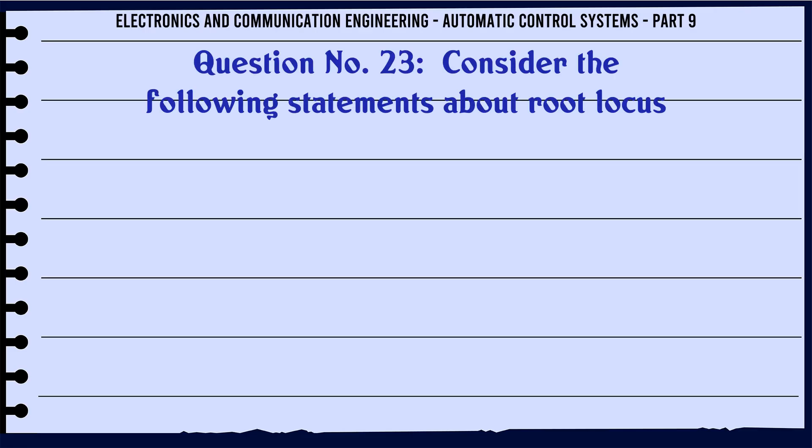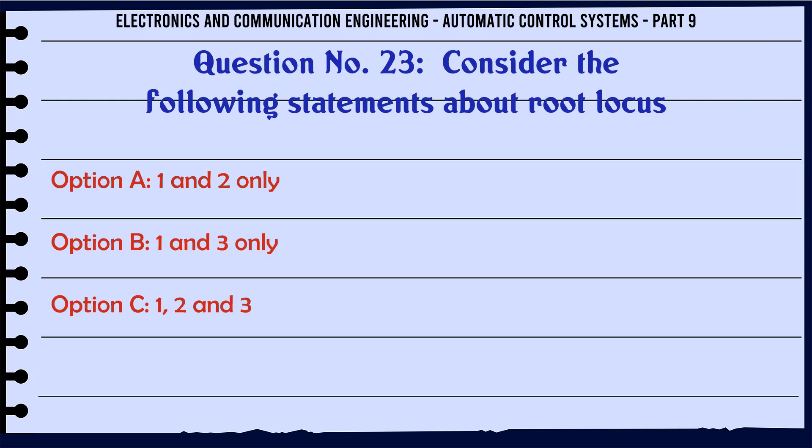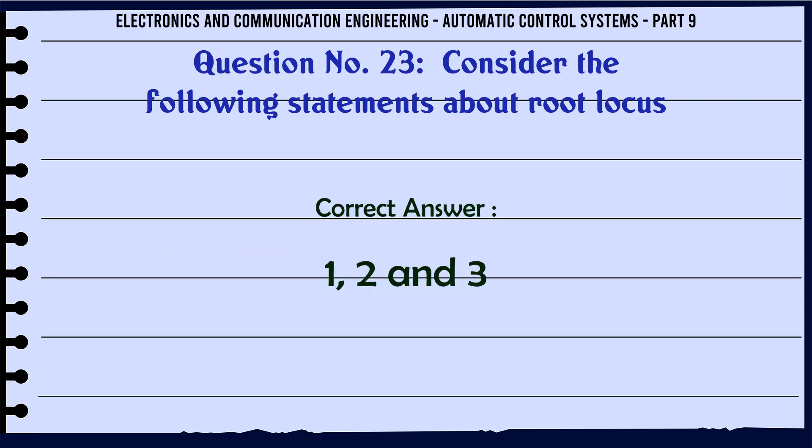Consider the following statements about root locus. Options: A. 1 and 2 only, B. 1 and 3 only, C. 1, 2 and 3, D. 2 and 3 only. The correct answer is: 1, 2 and 3.